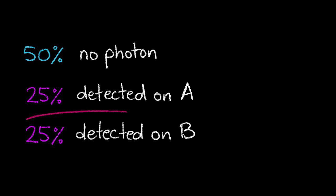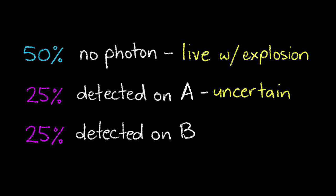Now this last 25% is the real significance of this experiment. So when no photon is detected, the bomb is live. When a photon is detected on A, it could be either live or a dud and the experiment needs to be repeated. But when a photon is detected on B, the bomb is live and we were able to detect this without an explosion.